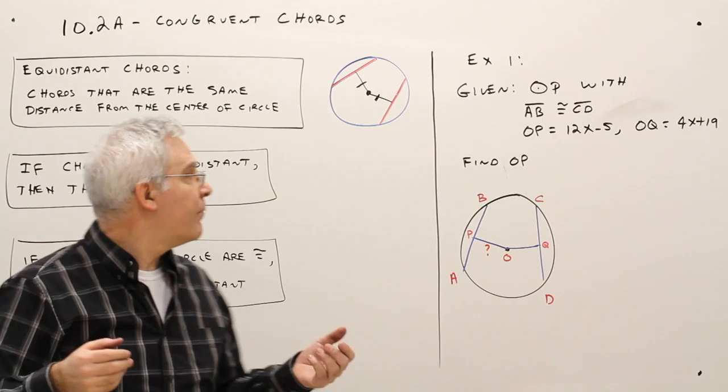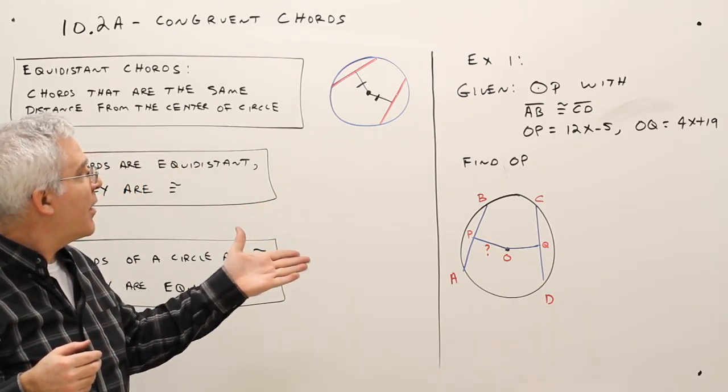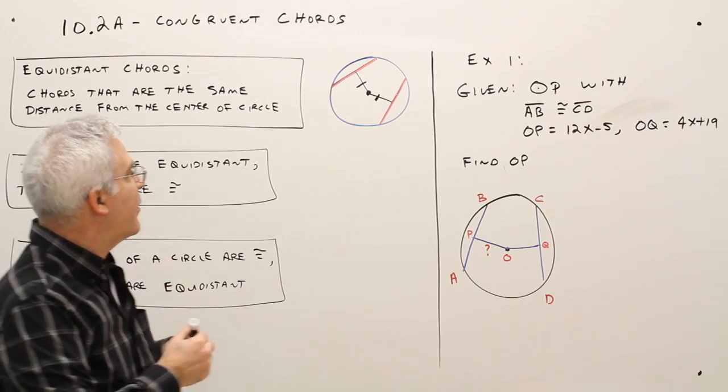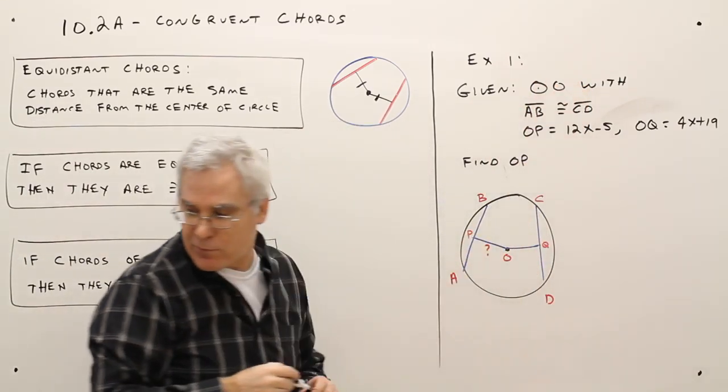Okay, there's simply one example, example one, let's do it. So given circle, well this should be circle O, given circle O,